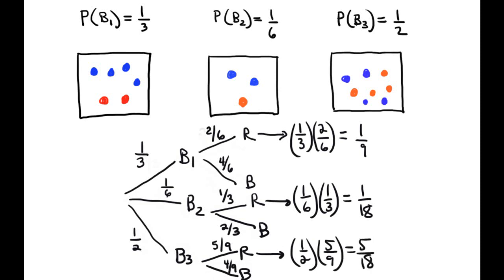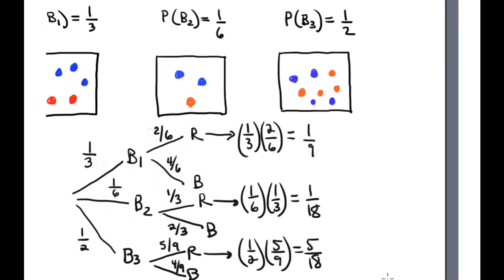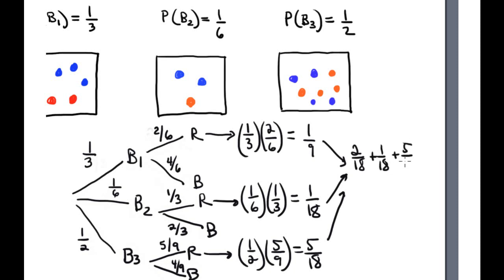Now, finally, the summation of the probabilities is 2 over 18 plus 1 over 18 plus 5 over 18, which equals 8 over 18. In lowest terms, the answer is 4 over 9. This is the answer for question 1.